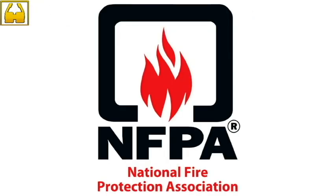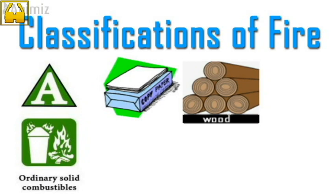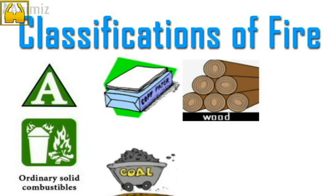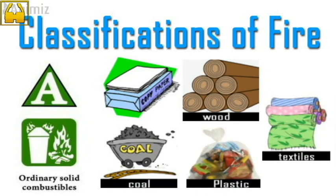Now we look into classifications of fire. According to the NFPA standards, the fire classifications are as follows. Class A fires: solid, combustible and organic materials come under Class A fires. Paper, wood, coal, plastic and textiles are the examples.